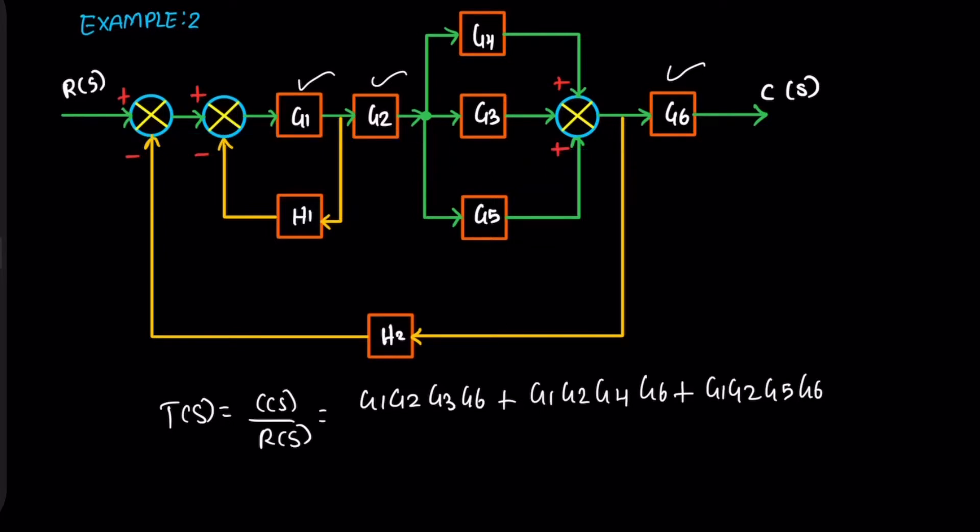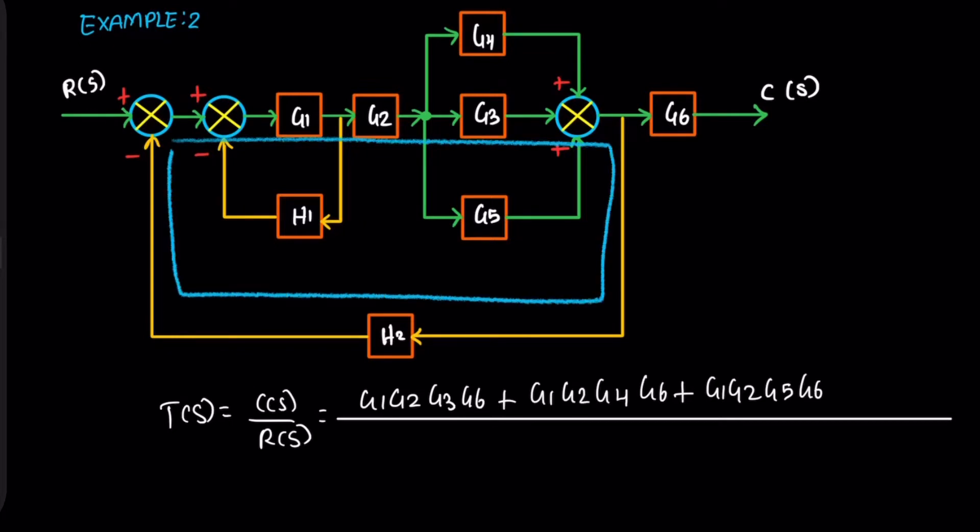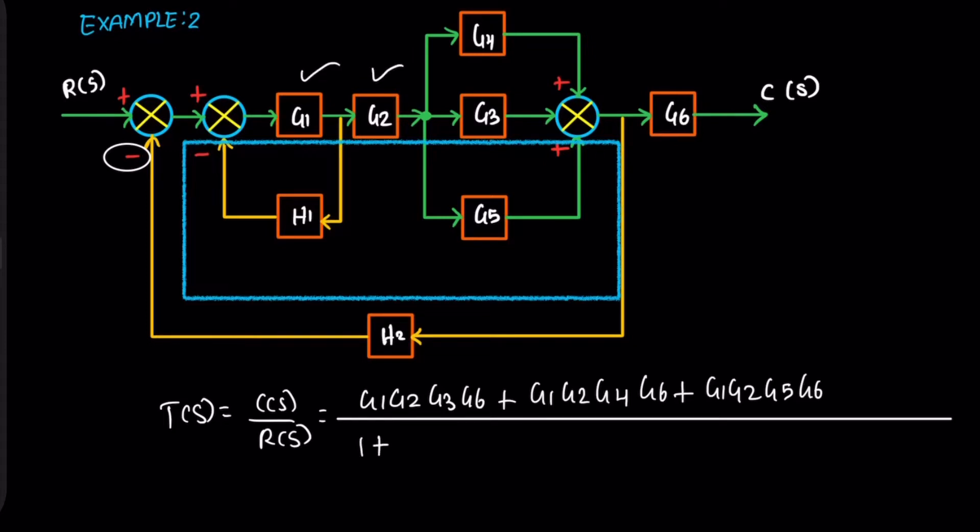The forward path is fully completed. Move to feedback. Starting from the first summing point, this path. Feedback is negative, so here positive value. One plus, the gain is G1, G2, G3, then H2. This part is completed.